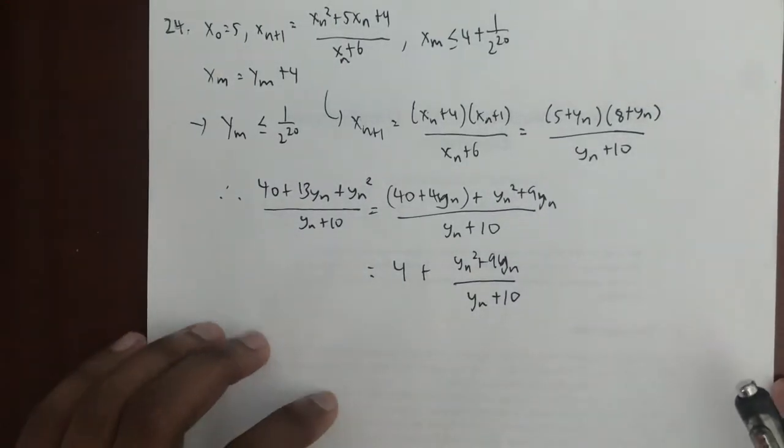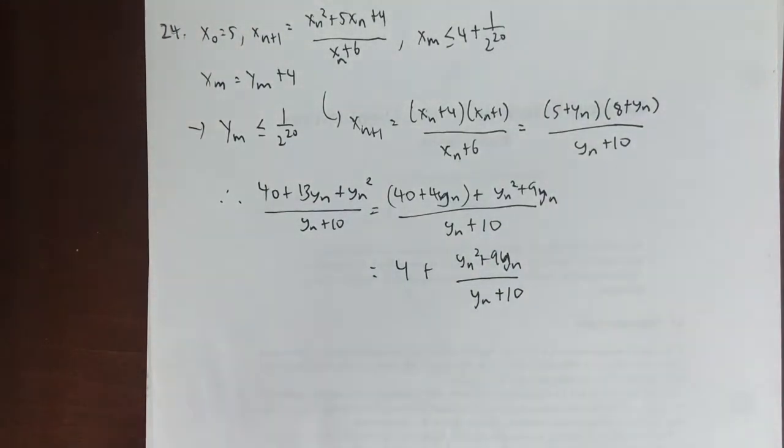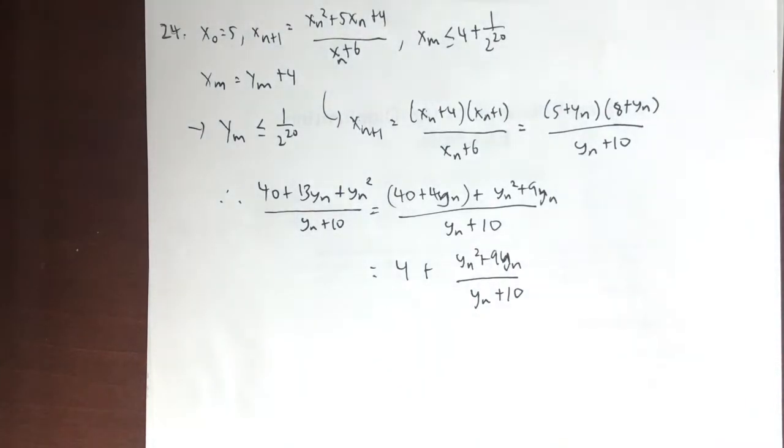What we see is this 40 + 4y_n is nothing more than just 4 times the denominator y_n + 10. So I can rewrite this now as 4 + (y_n^2 + 9y_n)/(y_n + 10). This 4 doesn't actually make too much of a difference because the answer choices are rather large intervals, so this 4 is rather minuscule. Down the road in our calculations, we're going to ignore this 4.